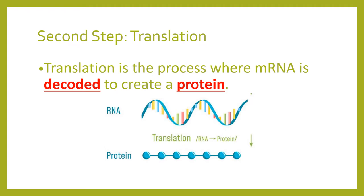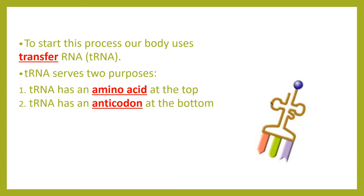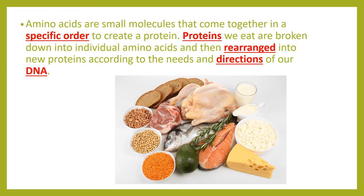The second step of protein synthesis is translation. Translation is the process where a messenger RNA is decoded to create a protein. Our body uses transfer RNA, or tRNA, to start this process. tRNA serves two purposes: it has an amino acid at the top and an anticodon at the bottom. Amino acids are small molecules that come together in a specific order to create a protein.